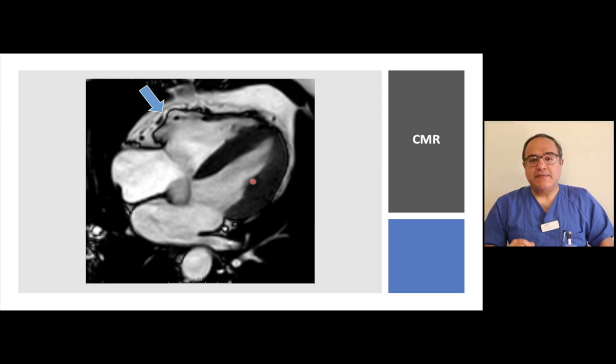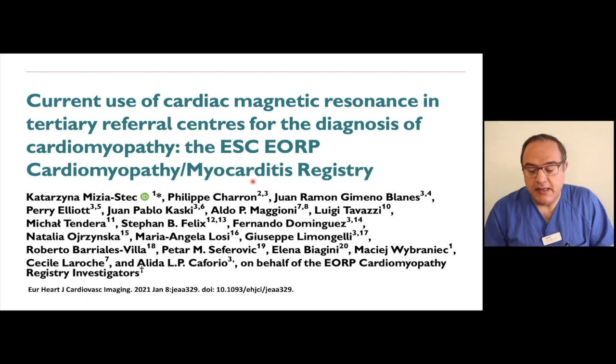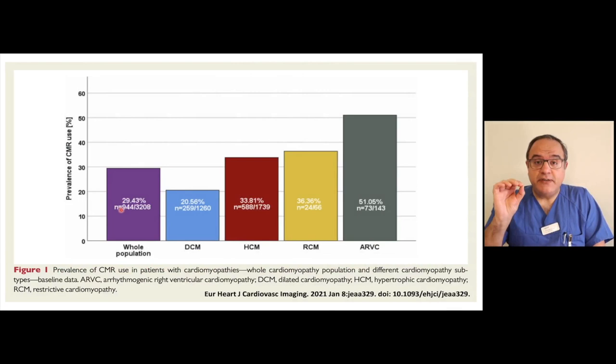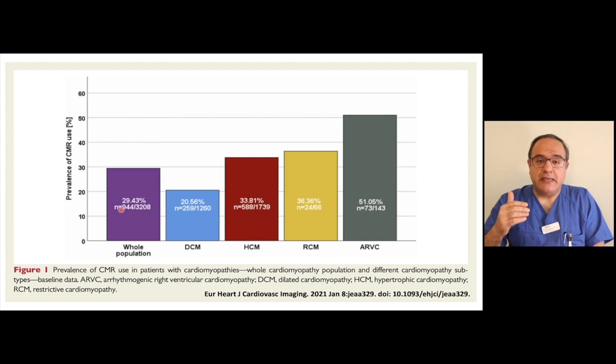Let's look at an important study recently published in the European Heart Journal about the current use of cardiac magnetic resonance imaging in tertiary centers for the diagnosis of cardiomyopathy. As shown here, in tertiary referral centers only about 30 percent of patients on average receive cardiac MRI. This is really concerning, because imaging can help us make the diagnosis, locate the scar, establish a differential diagnosis, and plan patient management.